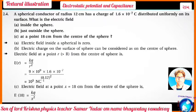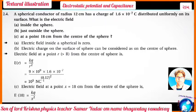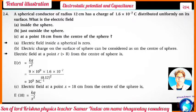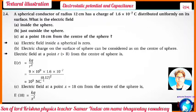The electric field inside the sphere is 0. The electric field on the surface of the sphere can be considered as concentrated at the center. The electric field at a point R = 0.12 m (on the surface): E = KQ/R² = 9×10⁹ × 1.6×10⁻⁷ / (0.12)² = 10⁵ N per coulomb.